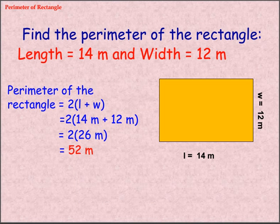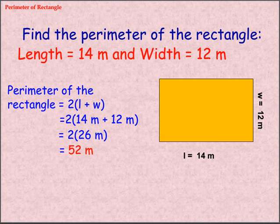Find Perimeter of Rectangle. Length equals 14 meters and width equals 12 meters. Perimeter of Rectangle equals 2 into L plus W, equals 2 into 14 meters plus 12 meters, equals 2 into 26 meters, equals 52 meters.